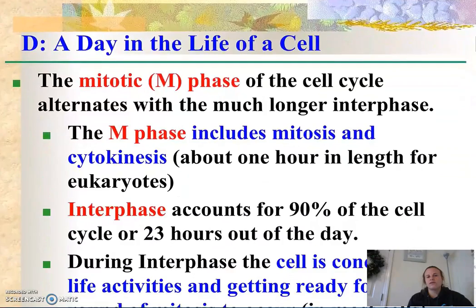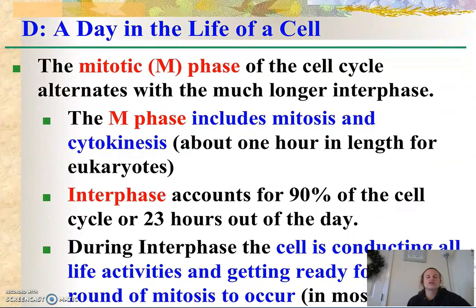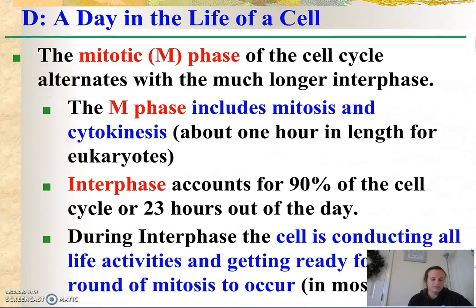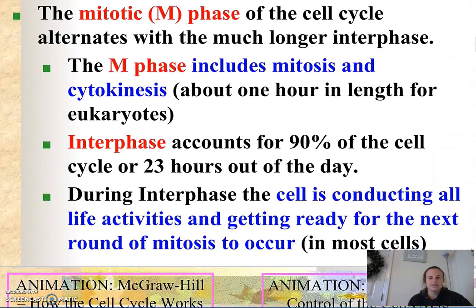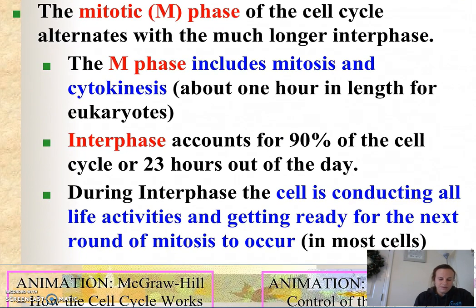If we looked at the life of a cell and put it on a 24-hour clock, most of the cell's time is spent in preparation for mitosis and cytokinesis. So there are two main phases: the M phase and interphase, where M phase includes mitosis and cytokinesis.